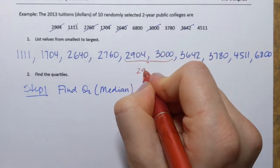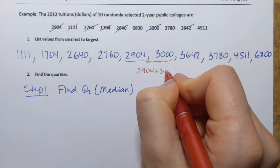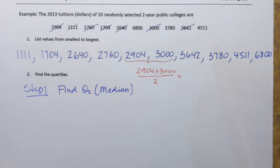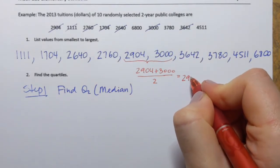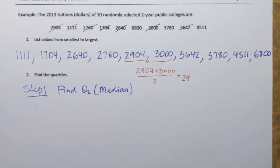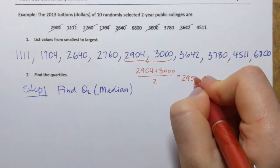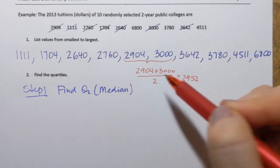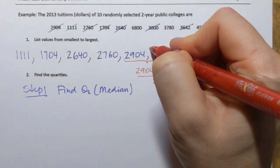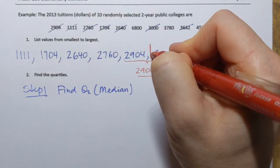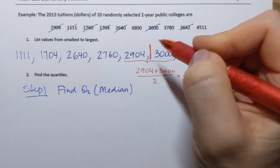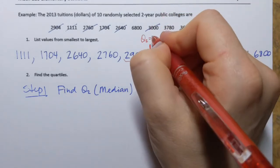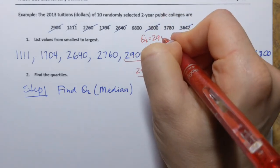And that is adding those two values together and dividing by two. I got 2,952. And I want to emphasize where exactly it's located or positioned in my data set. It's right here, right in the middle between 2,904 and 3,000. So Q2, which is the same as the median, is 2,952.